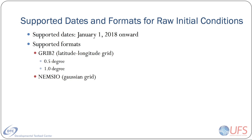NEMSIO is the input-output format associated with the NOAA Environmental Modeling System, or NEMS. The GFS currently used in operations outputs files in both NEMSIO and GRIB2, covering the globe with approximately 13km resolution.